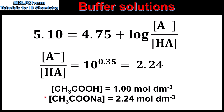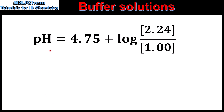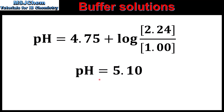To confirm: pH = pKa + log([salt]/[acid]) = 4.75 + log(2.24/1.00) = 5.10. This verifies how we determine the ratio of conjugate base to weak acid needed to produce a buffer solution with a specific pH value.